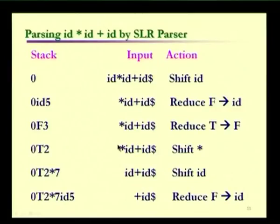The parser uses a stack that maintains terminals, variables, and states. There is also a buffer where the input is initially loaded. The stack is initialized with state 0, and the input buffer contains the entire string to be parsed, terminated by a dollar sign (end marker). At each step, we determine whether to shift or reduce based on the current stack top state and the current input symbol.